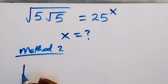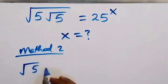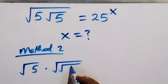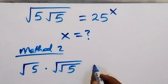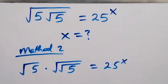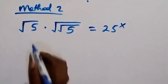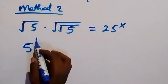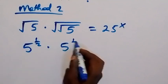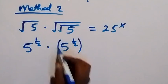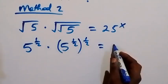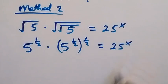Now let's use the second method. We rewrite what we have and separate it: root 5 multiplied by a part containing two roots, and 5 equals 25 raised to power x. We can write this as 5 raised to power one-half times 5 raised to power one-half, then raised to power one-half again — which equals 25 raised to power x.